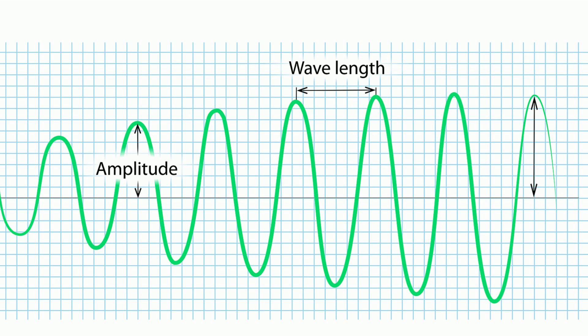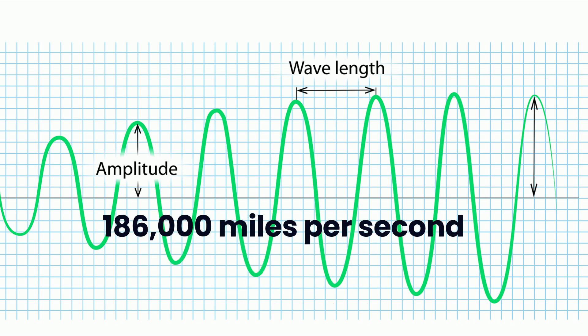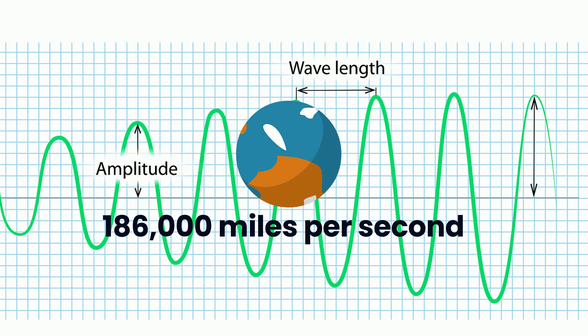Light travels in waves and it moves fast, around 186,000 miles per second. That's fast enough to cover the earth over seven times in one second.